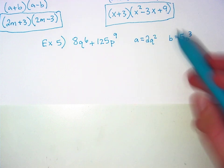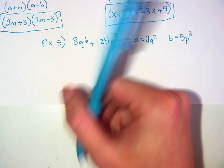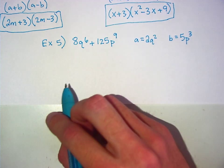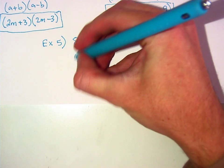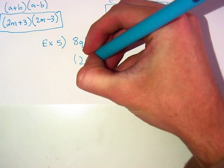So we know that A is 2Q squared because if we cube it it'll be 8Q to the 6th. Killing it, Sam. Keep going. Okay, and B is 5PQ.